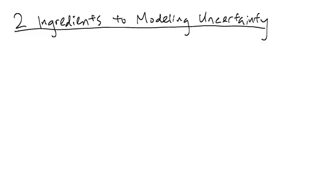To model uncertainty, it is sufficient to keep track of two ingredients. As a reminder, whenever we model uncertainty, we will assume that there is an underlying experiment of interest.